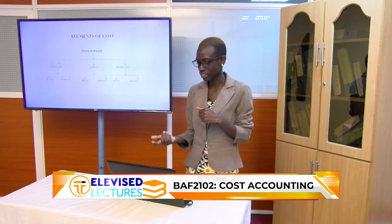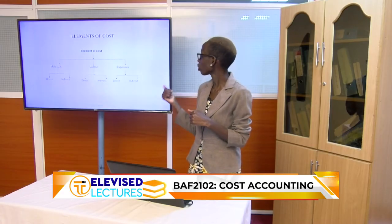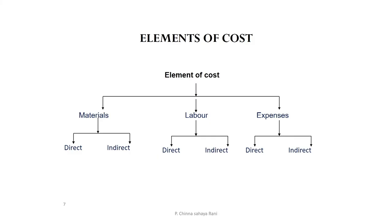We need to be able to distinguish how to identify a direct expense and an indirect expense. The same applies to expenses — they are also divided into direct and indirect. In summary, the elements of cost are material, labor, and expenses, and these three are classified under direct or indirect elements of cost.